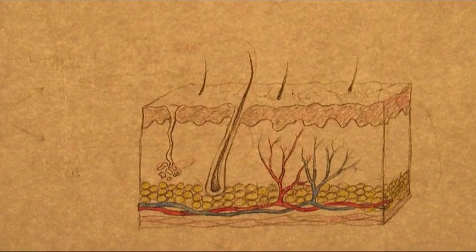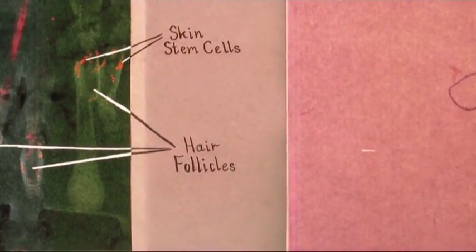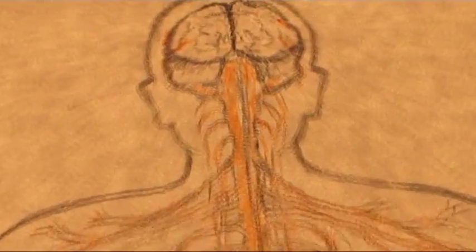They are used in the skin. We need to make new skin cells all the time because we are always wearing away our skin. And actually now we know they are present even in the brain.